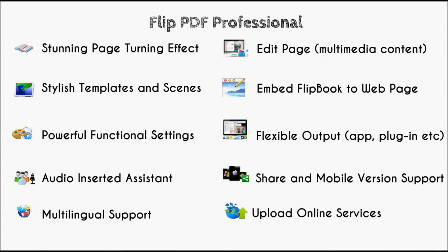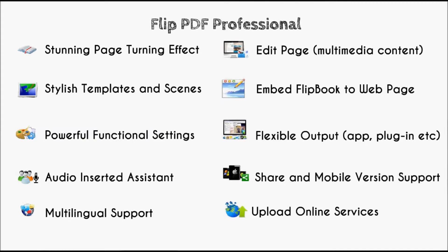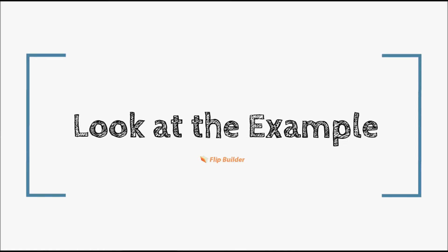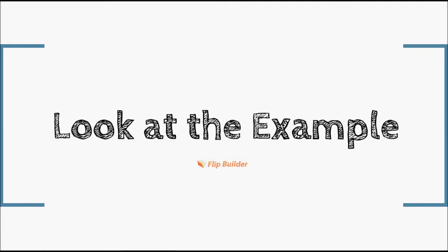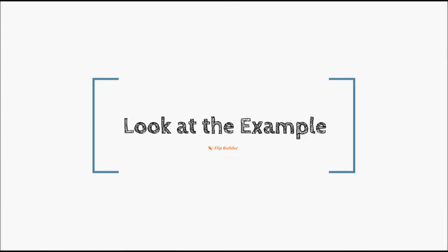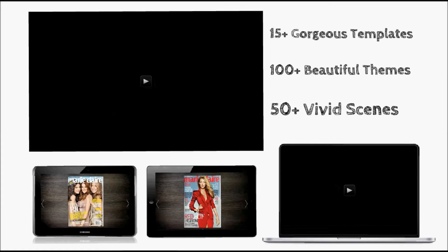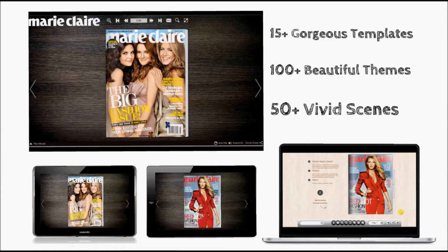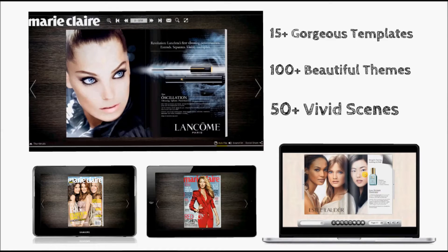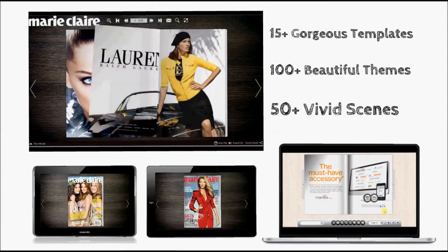There are 10 highlight features on the list, such as page turning effect, template, scenes, functional settings, multilingual support and mobile version. Now let's look at the examples. Over 15 gorgeous templates, over 100 beautiful themes and over 50 vivid scenes to create a flipping book with your own fashion style.